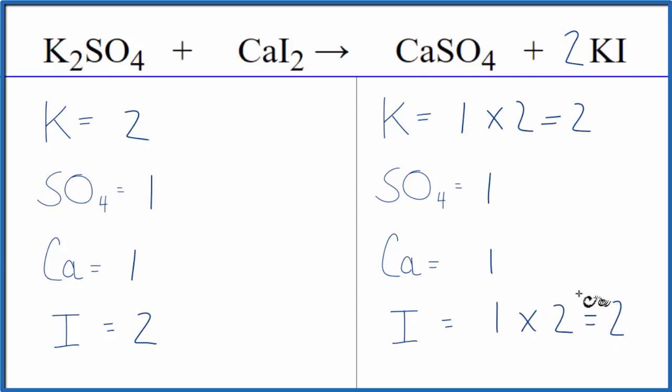And now the equation's balanced. So you can see the utility of counting polyatomic ions as just one thing if they appear on both sides when you have these double displacement reactions. This is Dr. B with the balanced equation for K2SO4 plus CaI2. Thanks for watching.